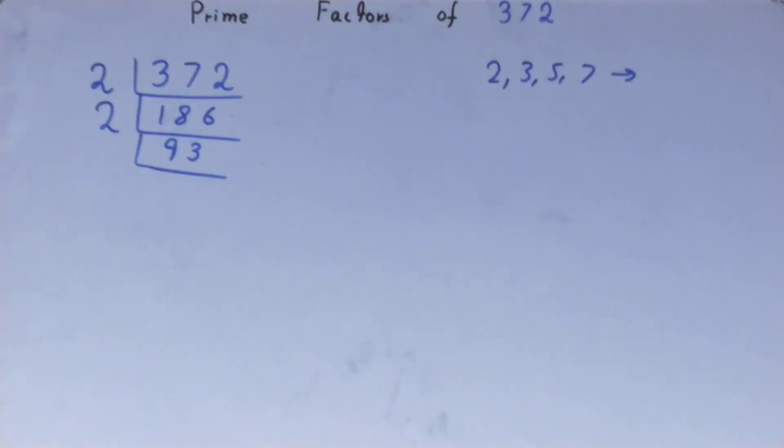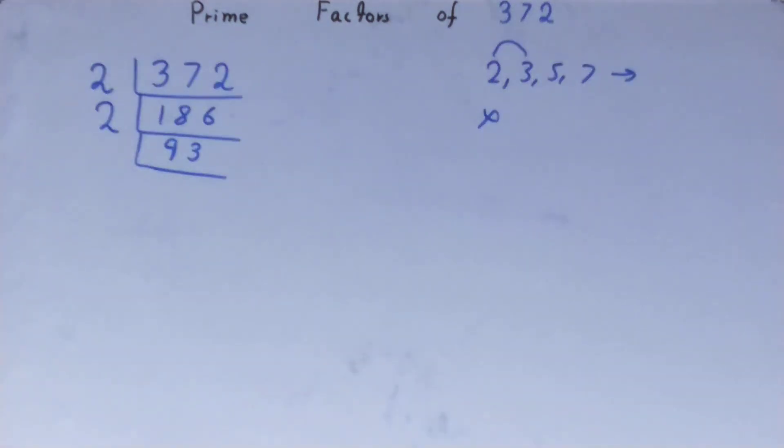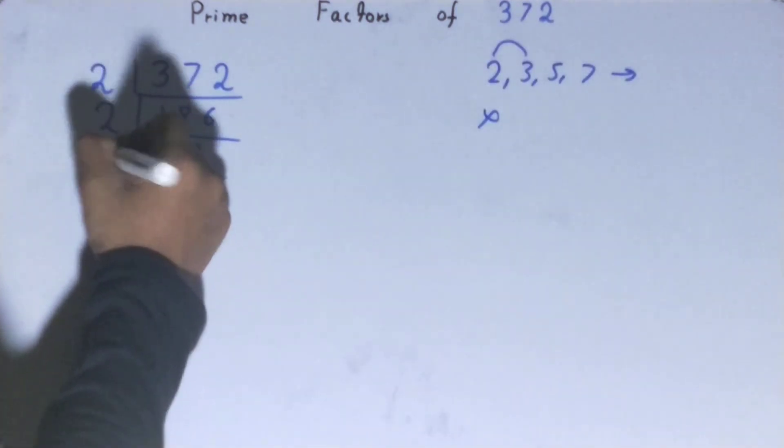So what we'll do, we'll go to the next lowest prime number we have, that is 3. Is this 93 divisible by 3? Yes, it is divisible, so divide it. It will go in 31 times.